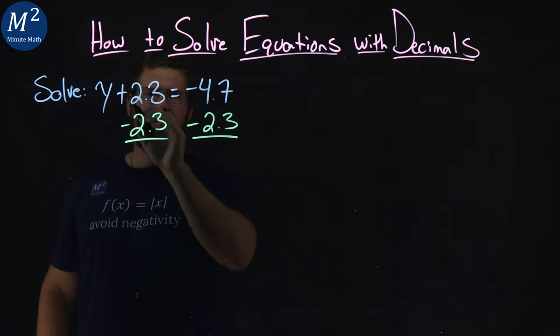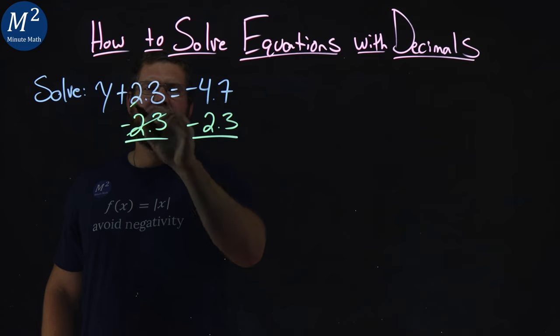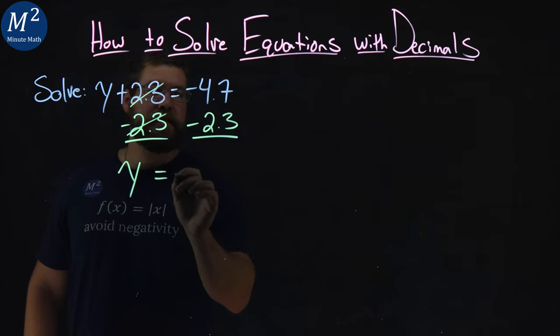Well, I have the 2.3s cancel on the left, we're good there, and I have y by itself.